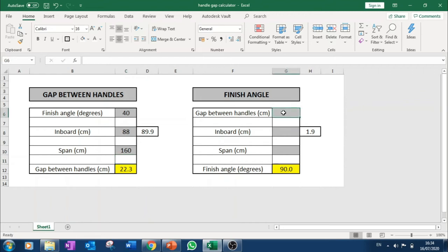I'm now going to do the same thing on the other side but just go in reverse. So I'm going to put in I have a finish width of 22.3cm, my inboard is 88cm and my span is 160cm. What is my finish angle? And it tells me my finish angle is 40 degrees. If I increase the gap between my hands to 25cm then I increase the finish angle to 41.3 degrees.